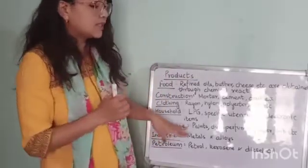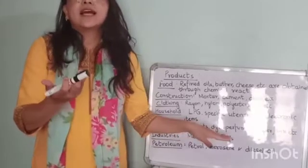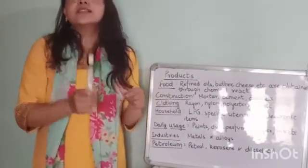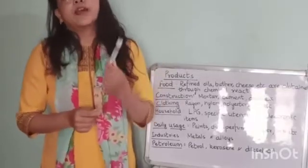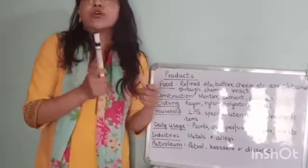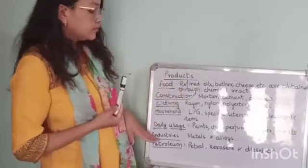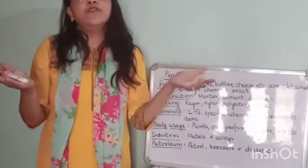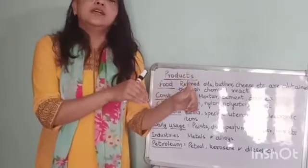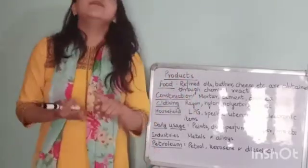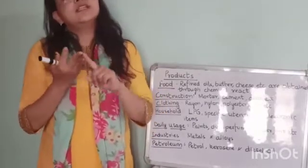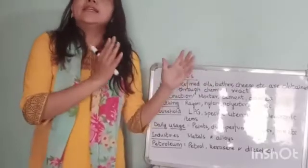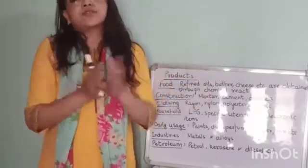In daily usage, paints, dyes, ink, and paper all involve chemistry. This whiteboard marker I'm using right now has ink, so it is also a product of chemistry. In industries, metals and alloys are used in different types of machines and go through chemical processes. Petrol, diesel, and kerosene are all products derived from petroleum using chemistry.